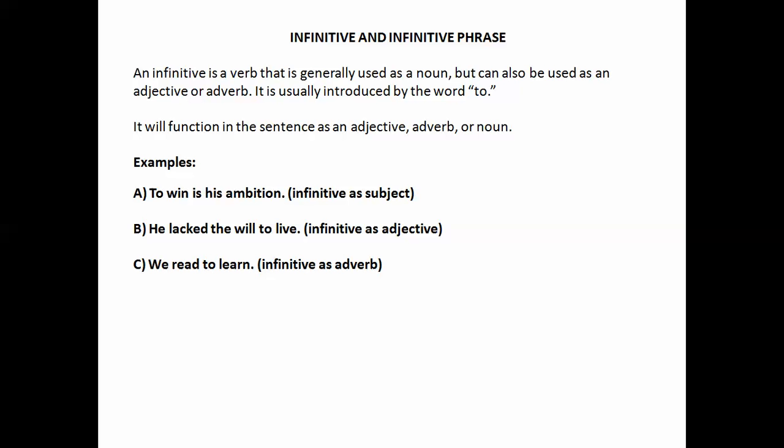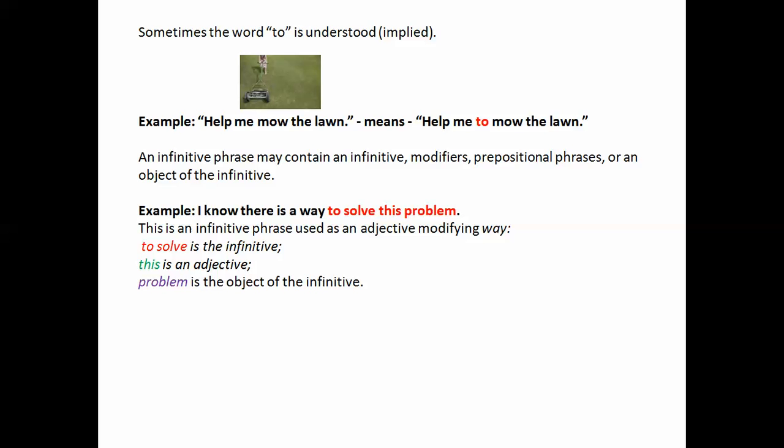We read to learn. To learn tells you why we read. So here to learn is being used as an adverb. Sometimes the word to is understood or implied. For example, help me mow the lawn actually means help me to mow the lawn. And here it's at the end of the sentence. It answers the question, what, help what, so it's a direct object.